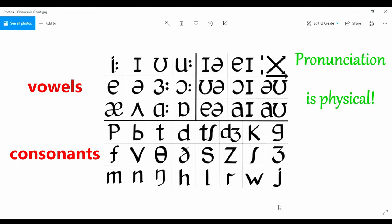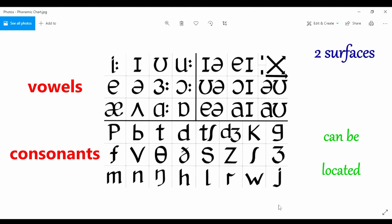Pronunciation is physical. Perfecting an accent is physical and the chart is set out accordingly. Consonants can be physically located or described using the lips, teeth or tongue, for instance. They involve two surfaces and some form of obstruction.